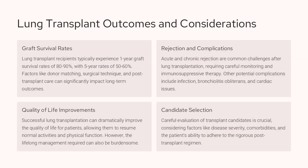Lung transplantation can be a life-changing procedure, but it comes with significant challenges. Survival rates are generally good in the first year at 80 to 90 percent, but drop to 50 to 60 percent at five years. Factors like donor matching, surgical technique, and post-transplant care greatly impact long-term outcomes. Rejection and complications are common, requiring close monitoring and immunosuppressive therapy. Issues like infection, bronchiolitis obliterans, and cardiac problems must be carefully managed. Successful transplantation can dramatically improve quality of life, but the lifelong management required can also be burdensome. Careful evaluation of transplant candidates is crucial, considering disease severity, comorbidities, and the patient's ability to adhere to the rigorous post-transplant regimen.